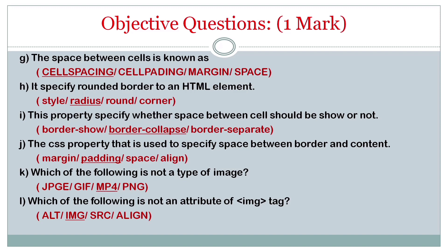It is specified rounded border to an HTML element - it can be either image, a division, a box, etc. This is radius. This property specify whether space between the cells should be shown or not - it is border collapse.